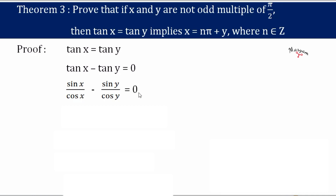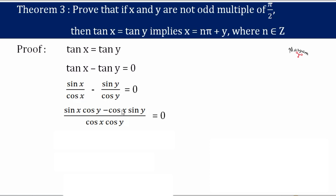Now, tan x is sin x / cos x and tan y is sin y / cos y, so we have sin x / cos x − sin y / cos y = 0. Taking the LCM as cos x · cos y, the numerator becomes sin x · cos y − cos x · sin y. Multiplying both sides by cos x · cos y, we get sin x · cos y − cos x · sin y = 0.